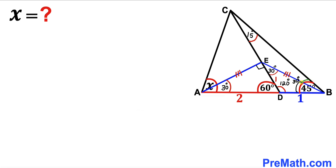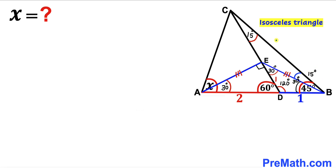Observing that the whole angle at B is 45 degrees and one part of it is 30 degrees, the remaining angle must be 15 degrees. Focusing on triangle BEC, we see this angle is 15 degrees and this angle is 15 degrees as well, so triangle BEC is isosceles, meaning side EB equals side CE.